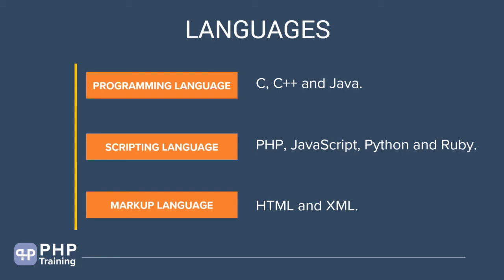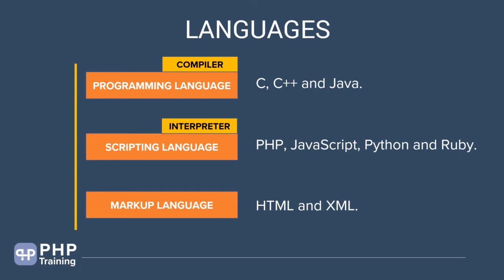For this lecture, understand there are three types of languages: programming languages, scripting languages, and markup languages, and you have to understand the differences between them. Programming languages mostly use compilers to compile the code, while scripting languages are interpreted — they don't need to be compiled; they run as-is. We're going to see an example of how this works in real time, and the next section will be about compiler versus interpreter.